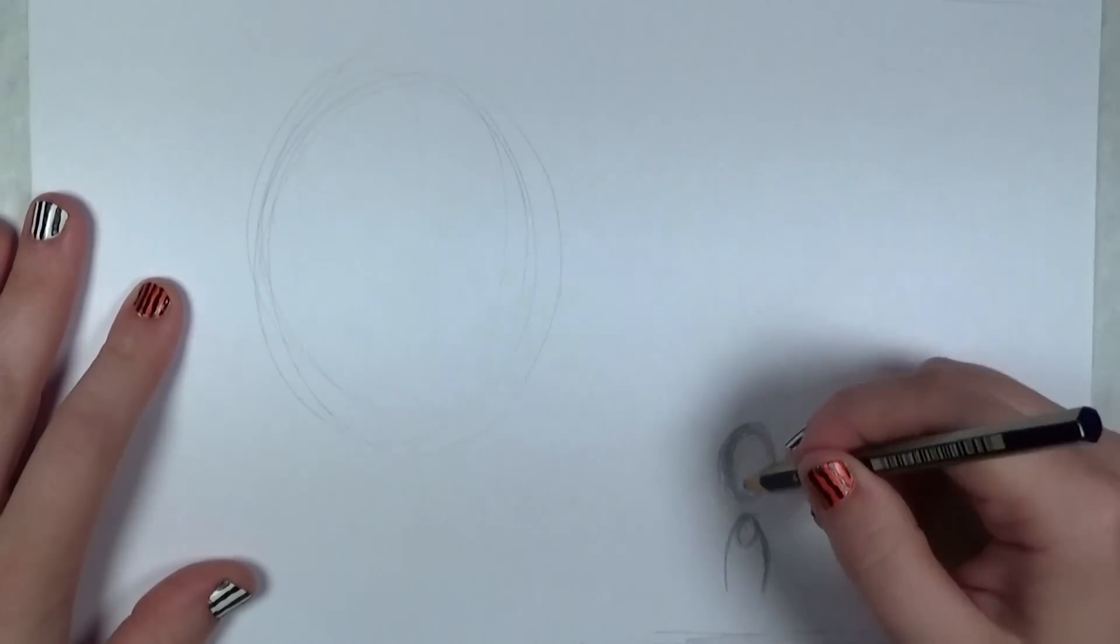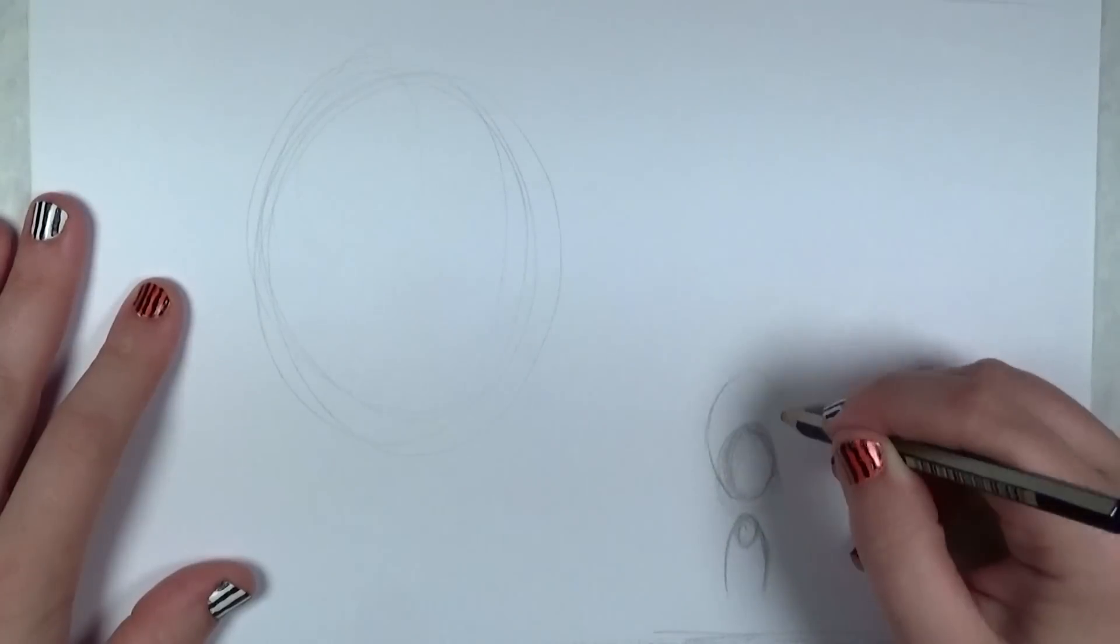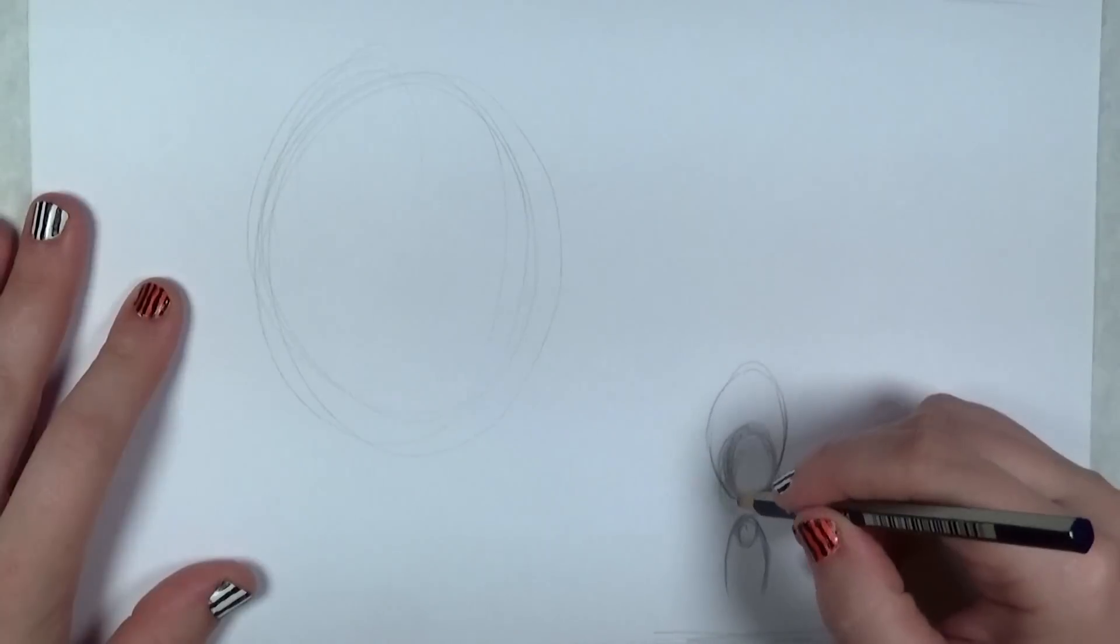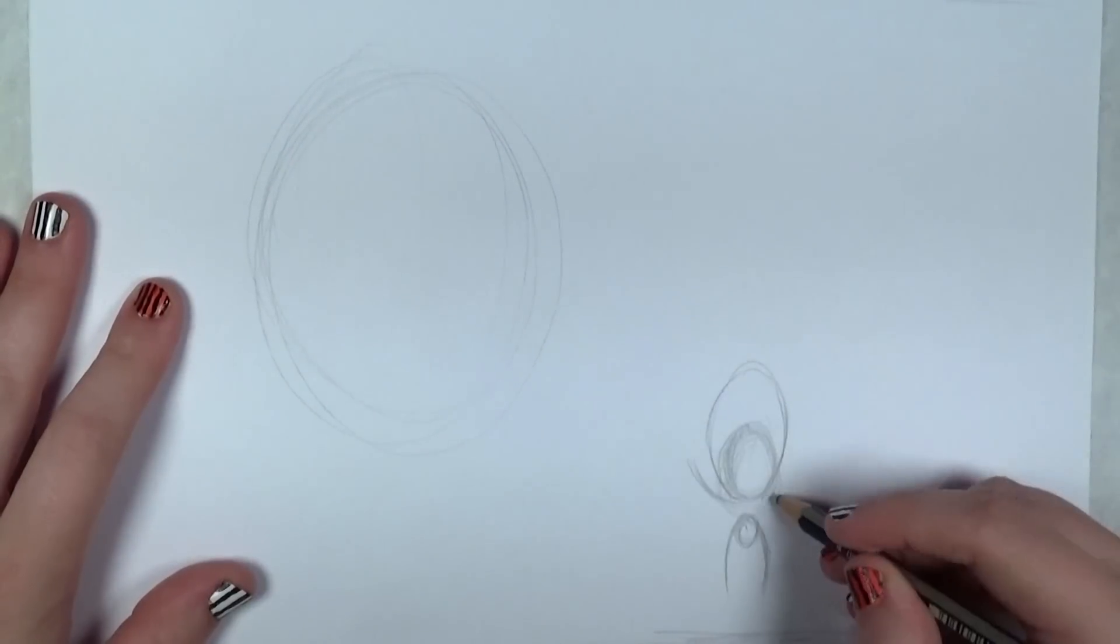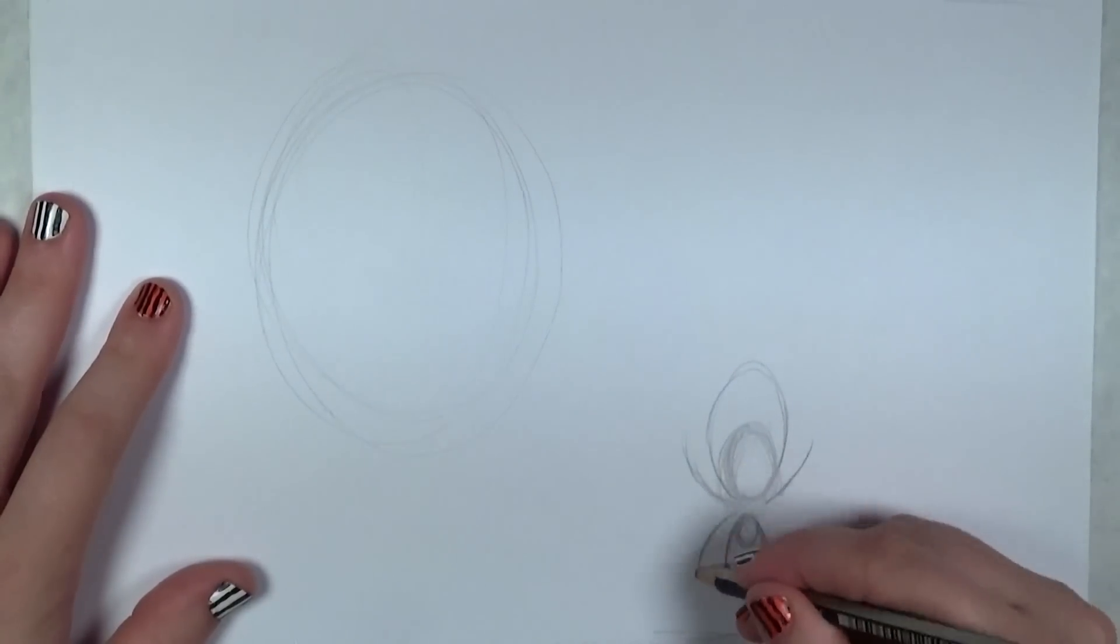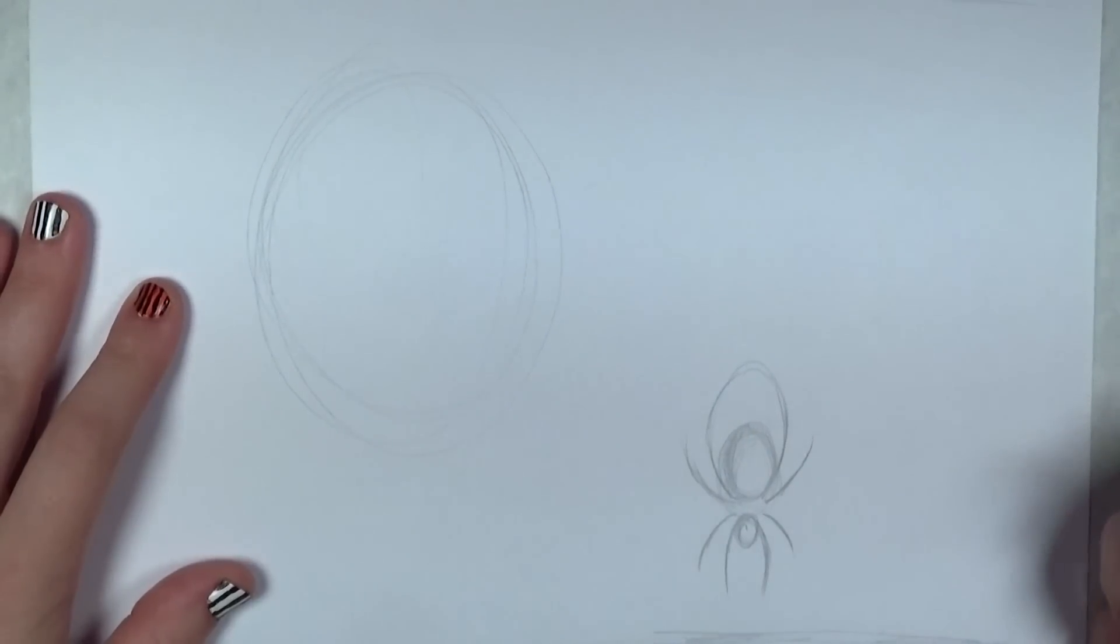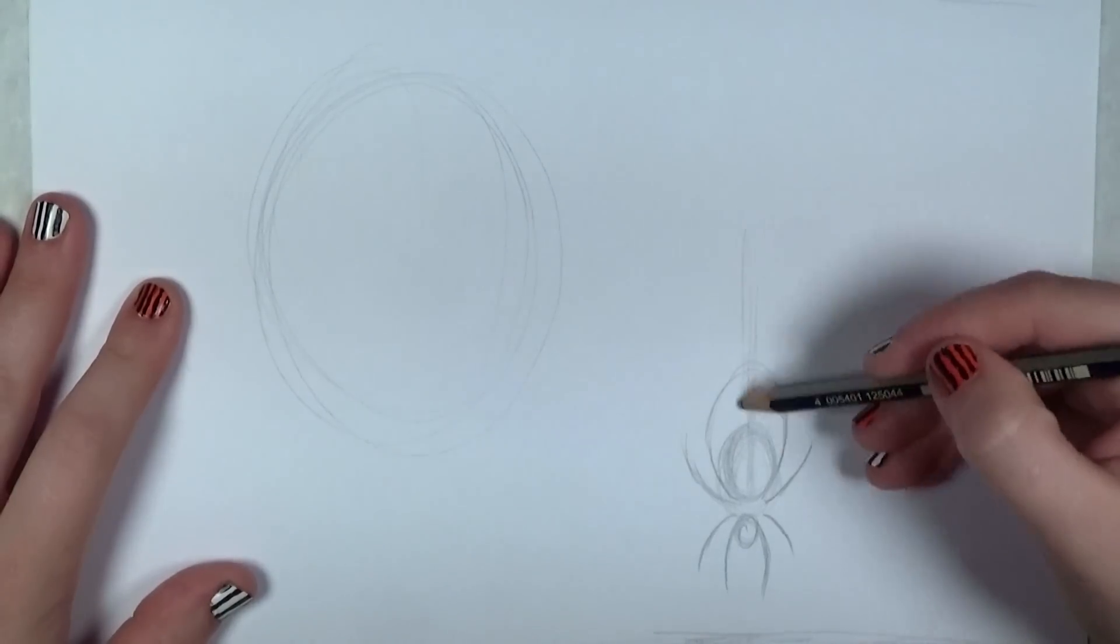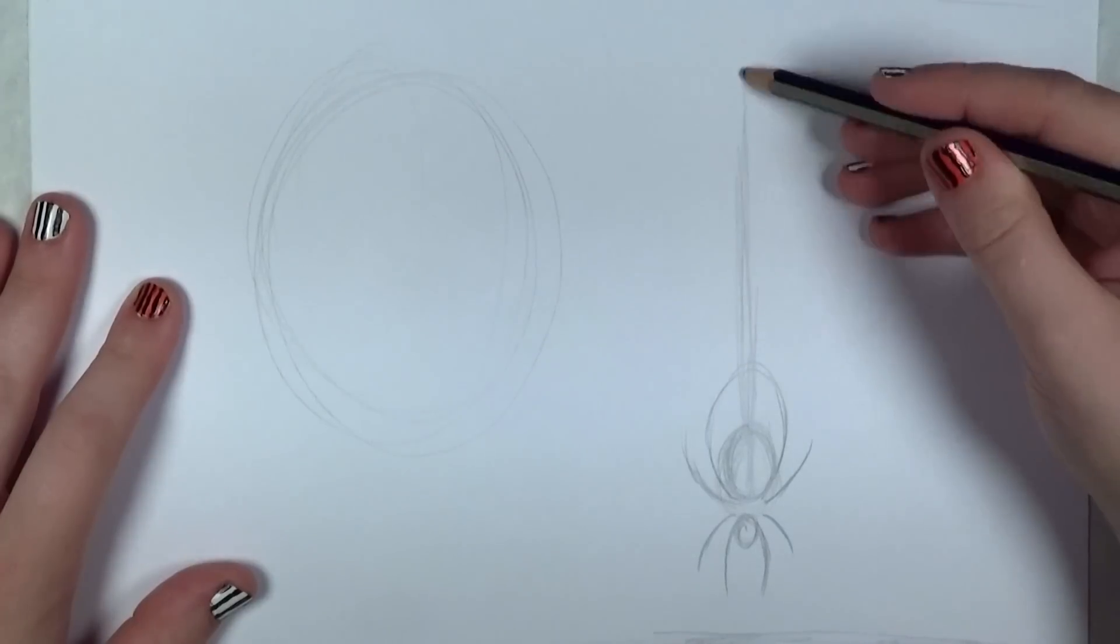Next I'm going to draw the legs. I'm doing really simple curved lines attaching to the body of the spider, and for the inner legs I'm not even going to attach them to the body. I'm going to leave a little space there because when I come back with a sharpie marker it's going to look a lot better. It won't look as crowded.